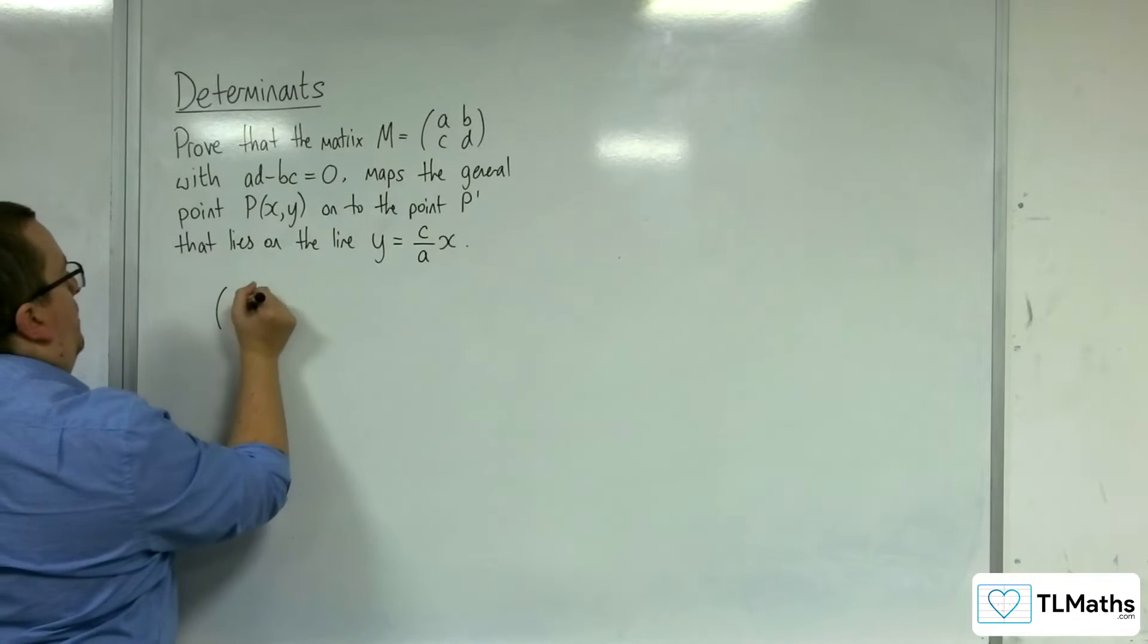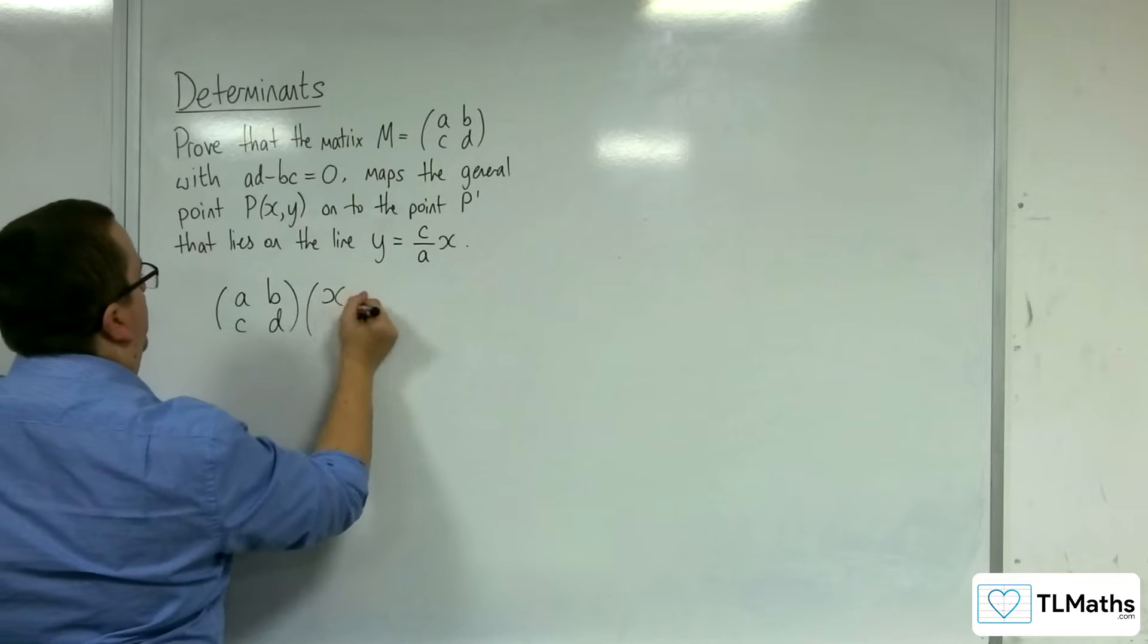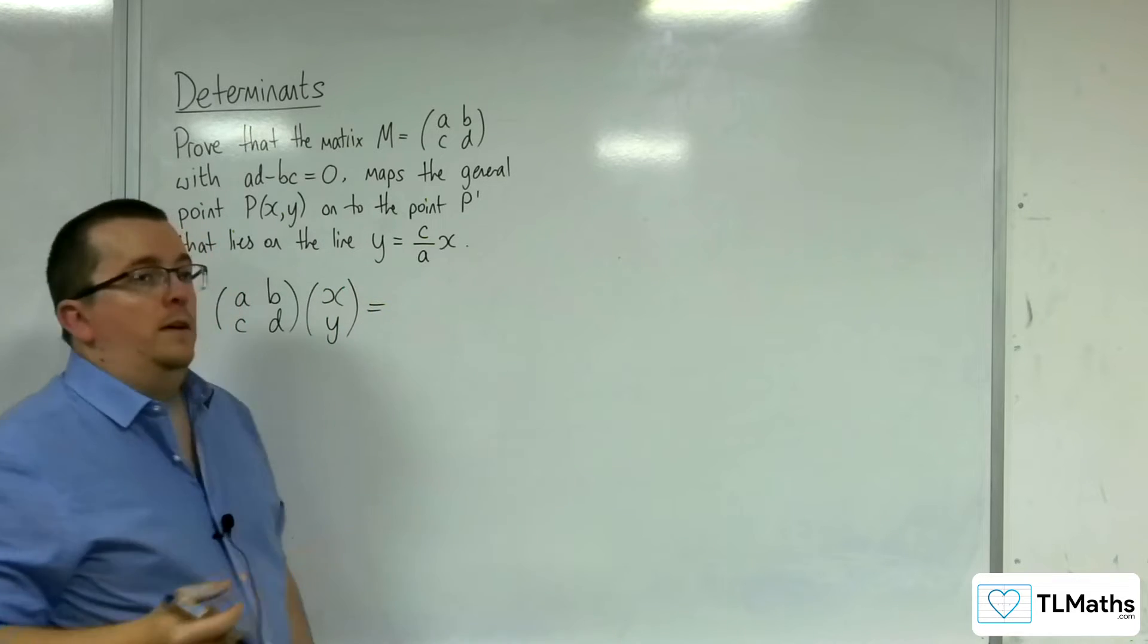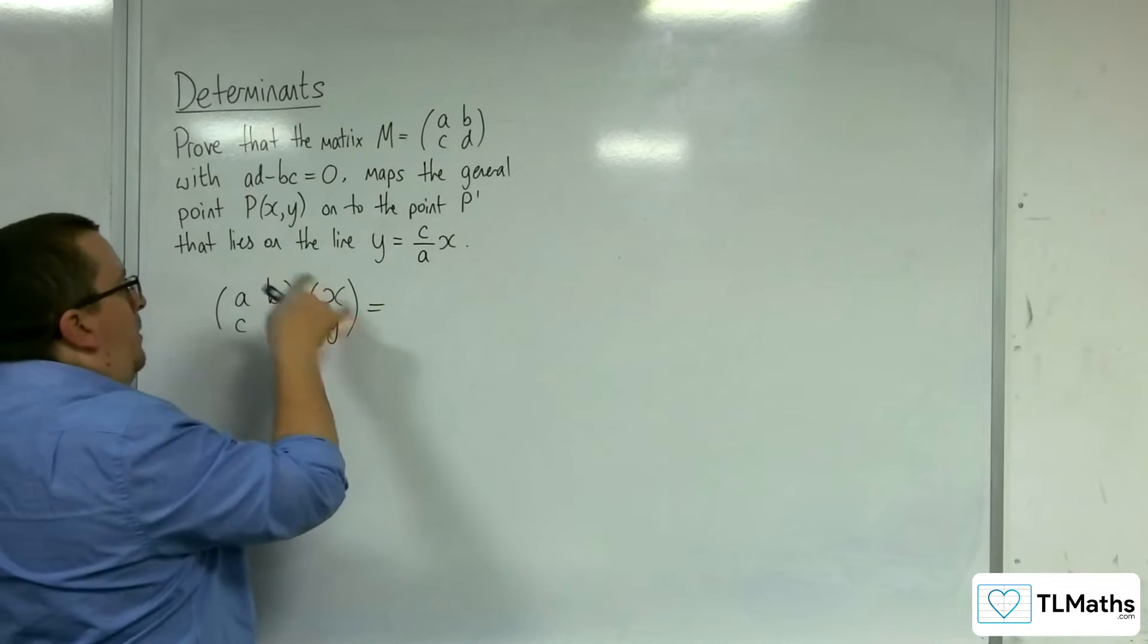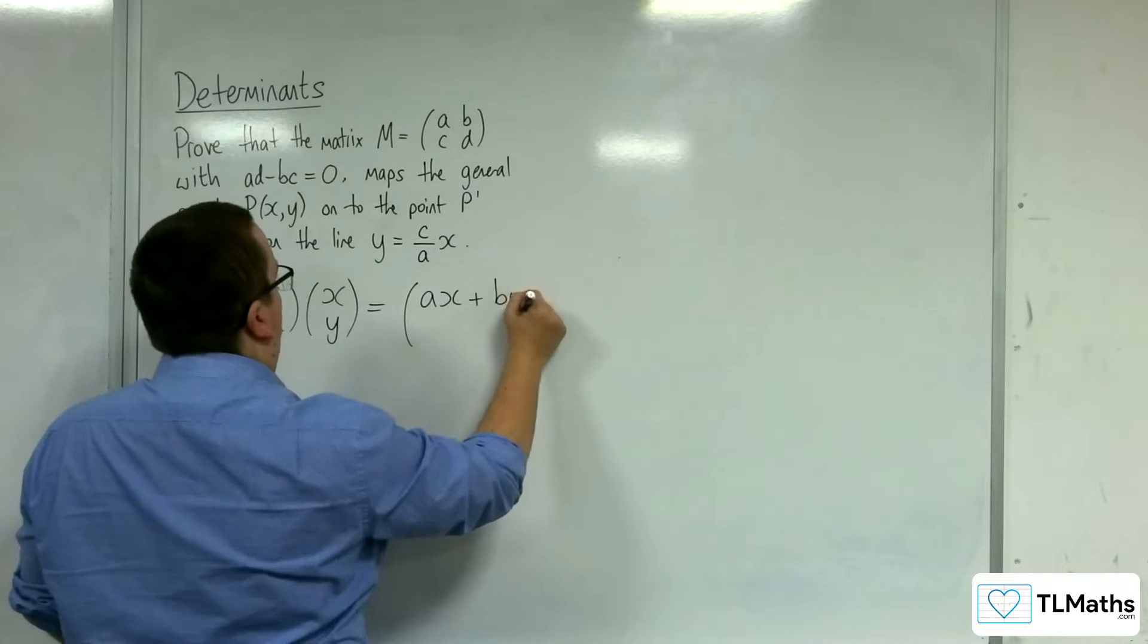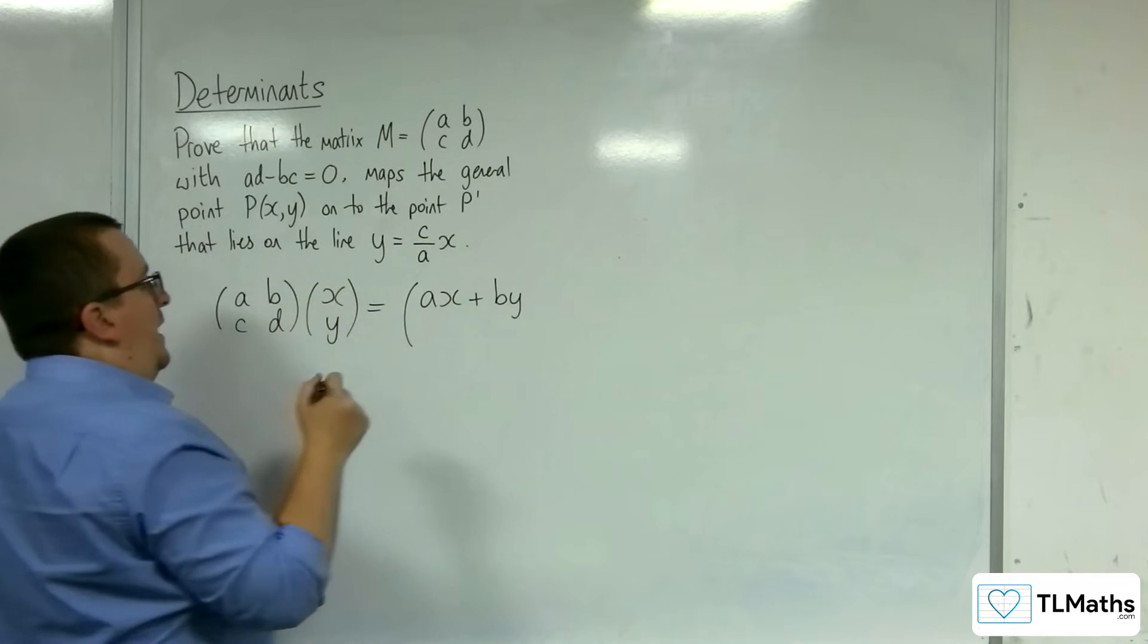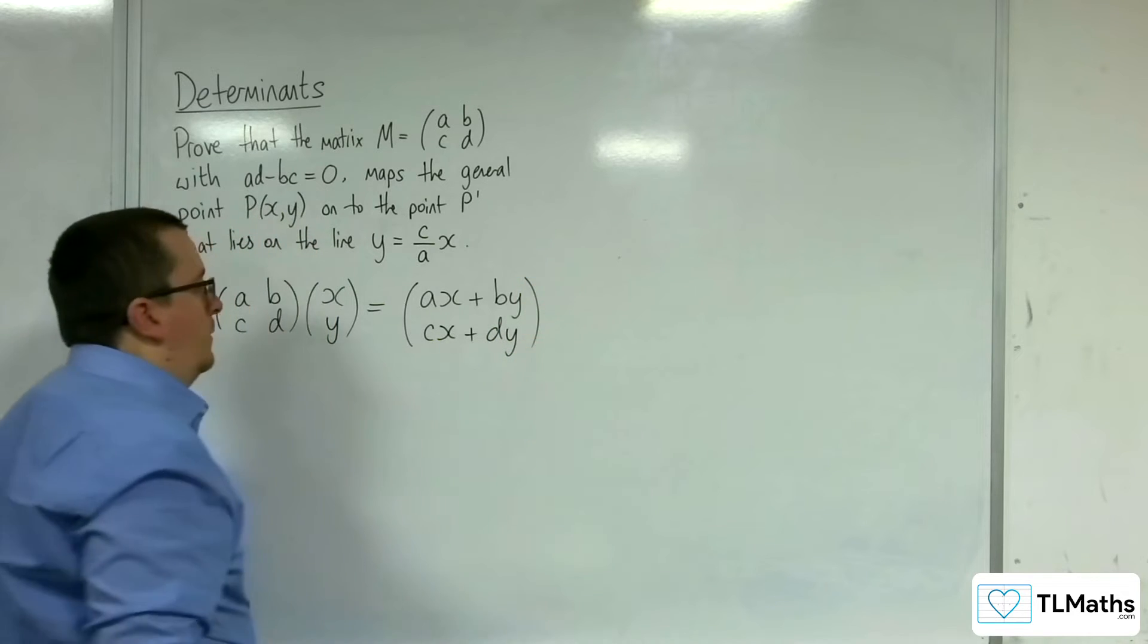So, let's apply the matrix M to the general point (x, y) and let's see what we get. We're getting (a b) multiplying with (x, y), so ax plus by, and (c d) multiplying with (x, y), so cx plus dy.